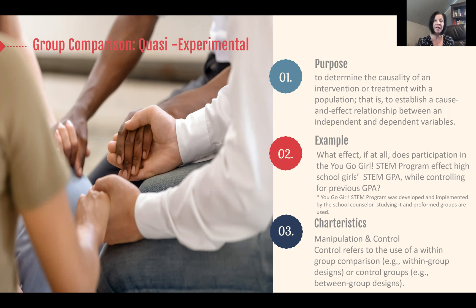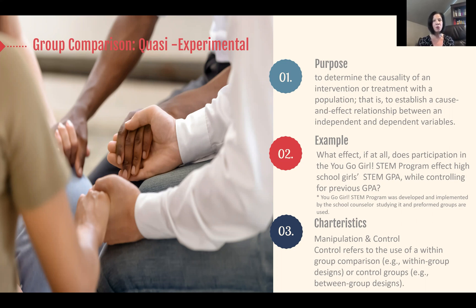Because the researcher uses previously formed groups, there are threats to validity. We can't say that the two groups being compared were equivalent before — for example, maybe the groups are not similar in ethnicity, not similar in their classification of special education services, or weren't equivalent to begin with on GPA. So it's important that some type of control — not a control group, but statistical control — is used. We're going to statistically control for GPA so we can use numbers to say the groups are equivalent.